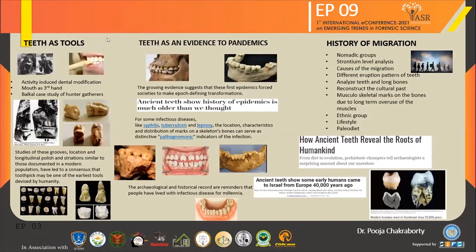Teeth as tools includes activity-induced dental modification. Each one of us has certainly used teeth as a third hand, but the same aspect when analyzed on ancient samples reveals surprising facts. Grooves on the occlusal surface of the Baikal case history people were most likely produced during the processing of fibers from plants and animals for making items such as nets and cordage, and regional variations were also present between genders.